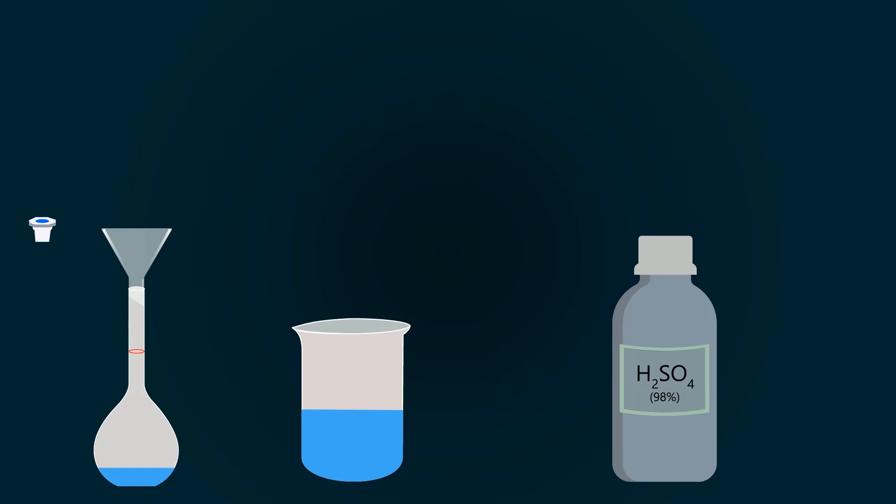Now take the bottle of 98% H2SO4. Open the lid and pipette out the required volume, which is 127.5ml. Now pour this into the volumetric flask.